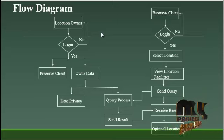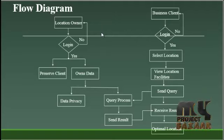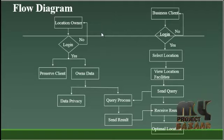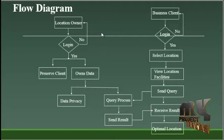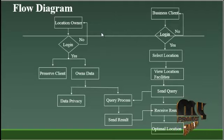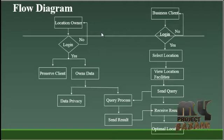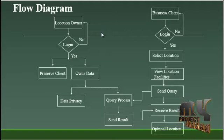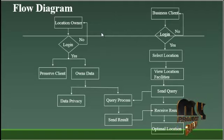The first process is 'Preserving the Client,' which is viewing the client's details. The business client has to register and login to view the location details. The registered users' details can be viewed by the location owner — that is the preserved client process.